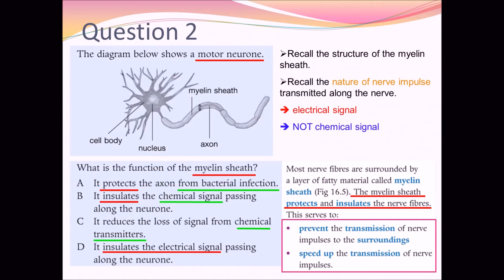Let's take a look at the MC questions. Question 2 is about a motor neuron. As you can see in the diagram, you can see the cell body, nucleus, axon, and the myelin sheath. The question asks what is the function of the myelin sheath. One thing to recall is that the neuron — the nerve cell — is responsible for transmitting the nerve impulse, and the nature of the nerve impulse is the electrical signal, not the chemical signal.